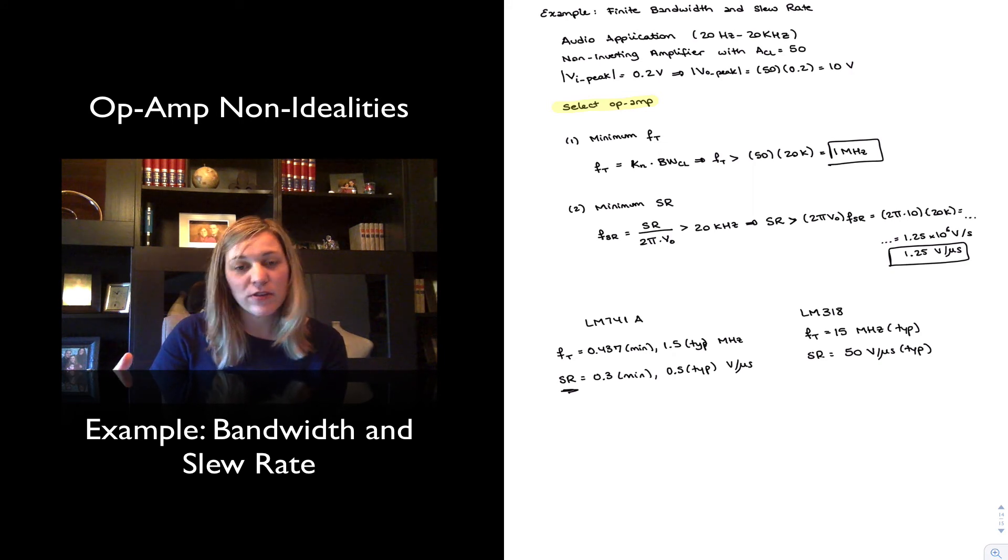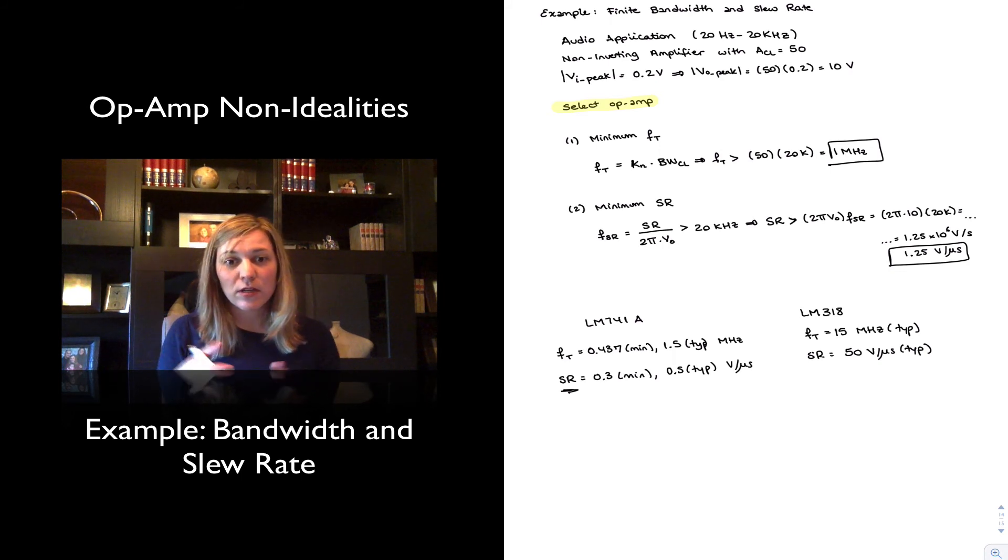And normally, for all these devices, whenever they give you a typical spec, what it means is that they have run a few hundreds of these devices, and they have tested them, and they have come up with a distribution. The typical value will be the mean of the distribution, but if you contact the company, they can probably also provide values for the standard deviation, etc., so that you get an idea for how far away from those 15 MHz or those 50 volts per microsecond you can expect most of the parts to be. And if it just so happens they give you a standard deviation, if you measure three standard deviations, you know that 99% of the parts are going to be within those ranges, and then you can perhaps add a little bit of sandbagging on both sides to make sure that you capture almost everything.